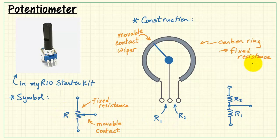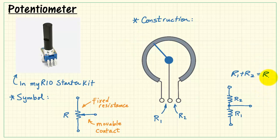The fixed resistance R, this is the way potentiometers are specified, is the same thing as the sum of those two individual resistances, R1 and R2.